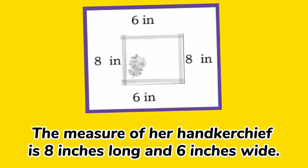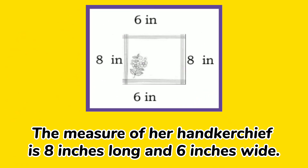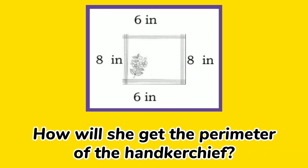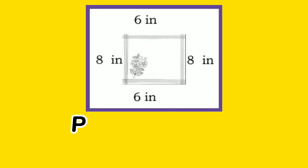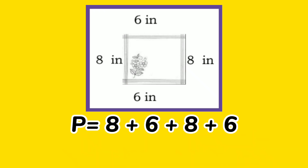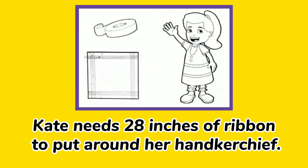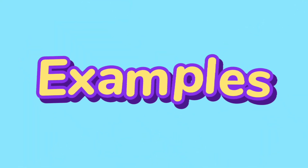The measure of her handkerchief is 8 inches long and 6 inches wide. How will she get the perimeter of the handkerchief? Simply add all the lengths of each side: 8 plus 6 plus 8 plus 6 equals 28 inches. Kate needs 28 inches of ribbon to put around her handkerchief.